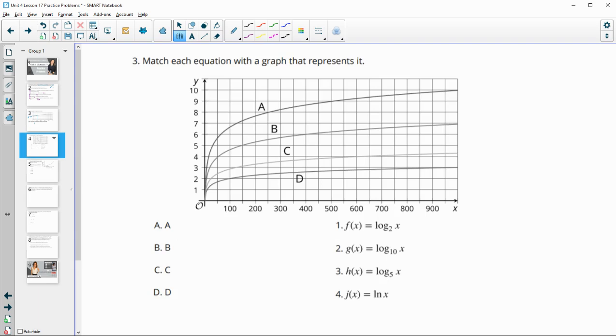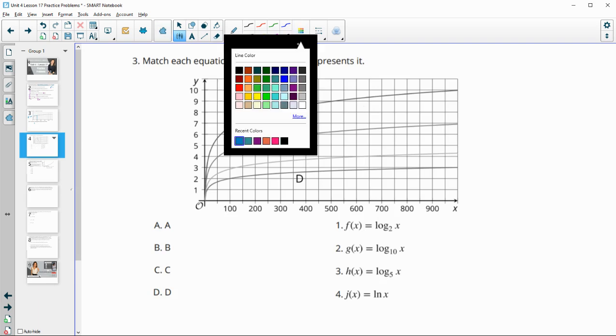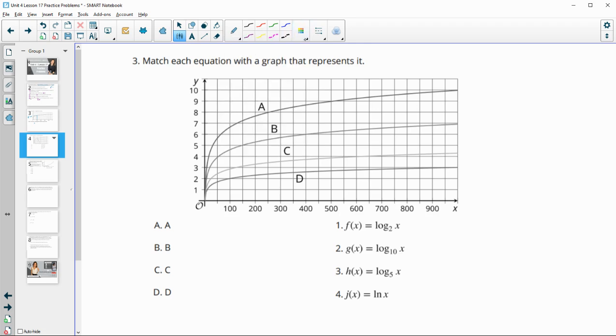Number three says match each equation with a graph that represents it. So all of these are logarithmic functions. When we're thinking about logarithmic functions, we've got these different bases here. So the base of number one is a 2, the base of number two is a 10, 3 is a 5, and 4 is an E.